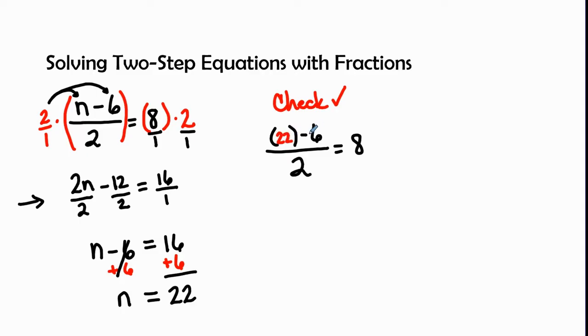Now, 22 minus 6, that gives me 16, divided by 2 equals 8. Bringing my 8 down on the right-hand side. 16 divided by 2 is 8 equals 8. And that checks. Awesome job.